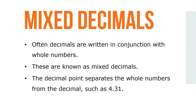Often, decimals are written in conjunction with whole numbers. These are known as mixed decimals. In mixed decimals, the decimal point separates the whole numbers from the decimal, such as 4.31.